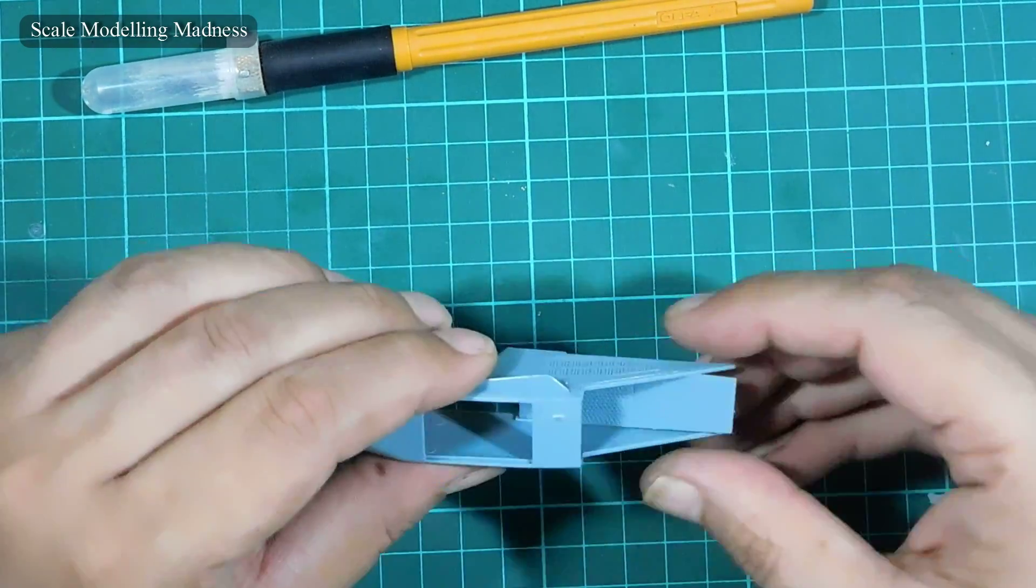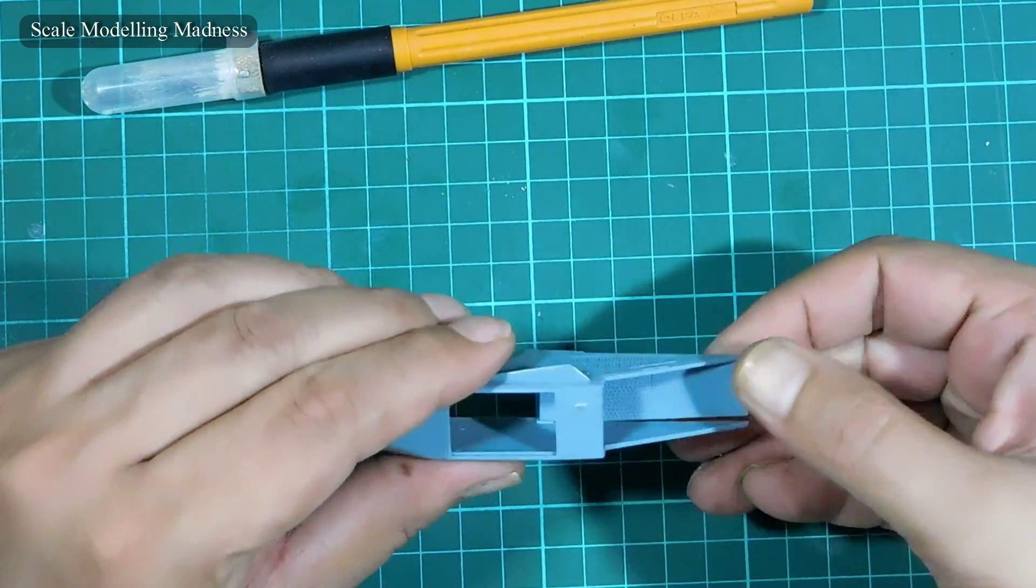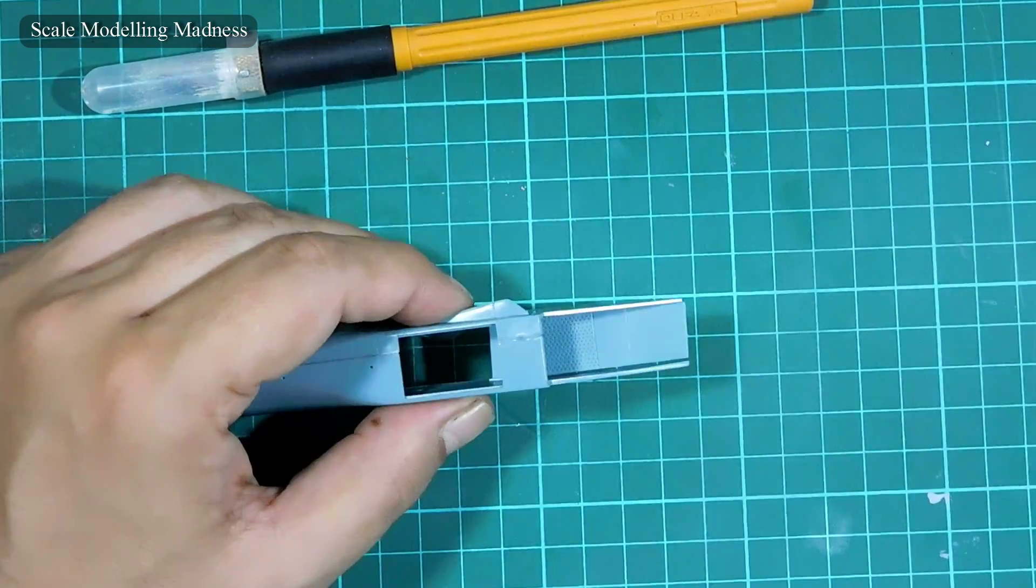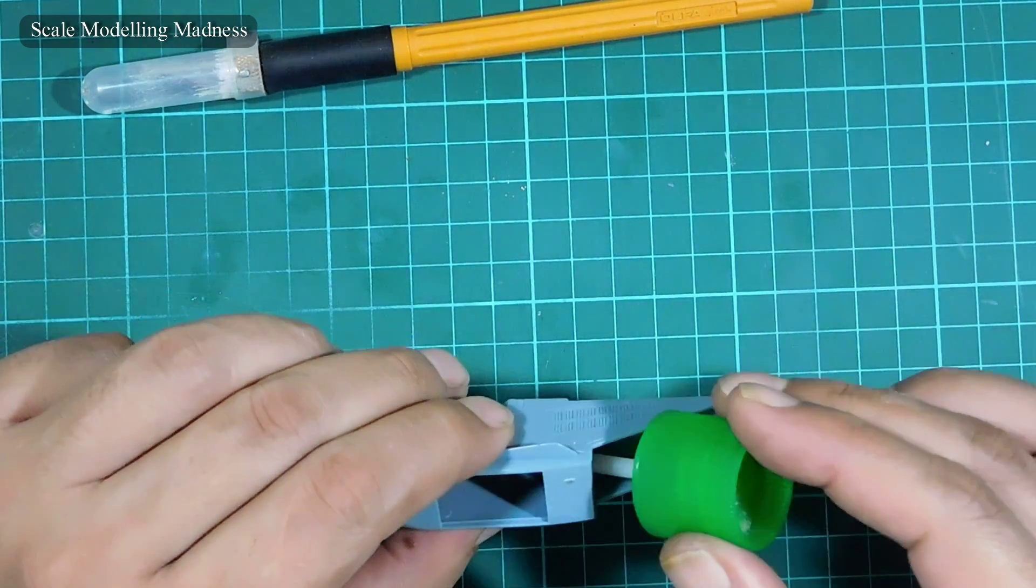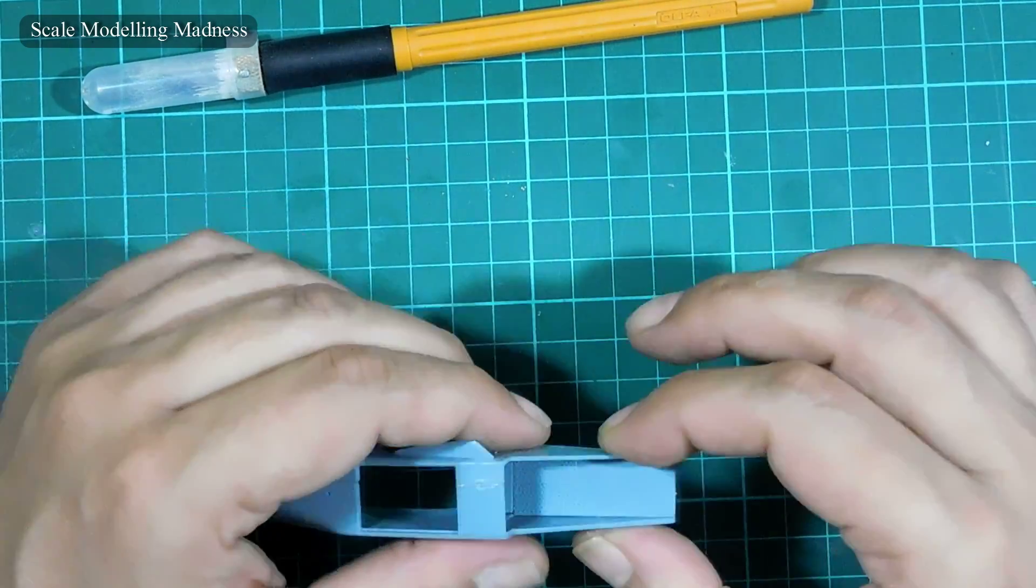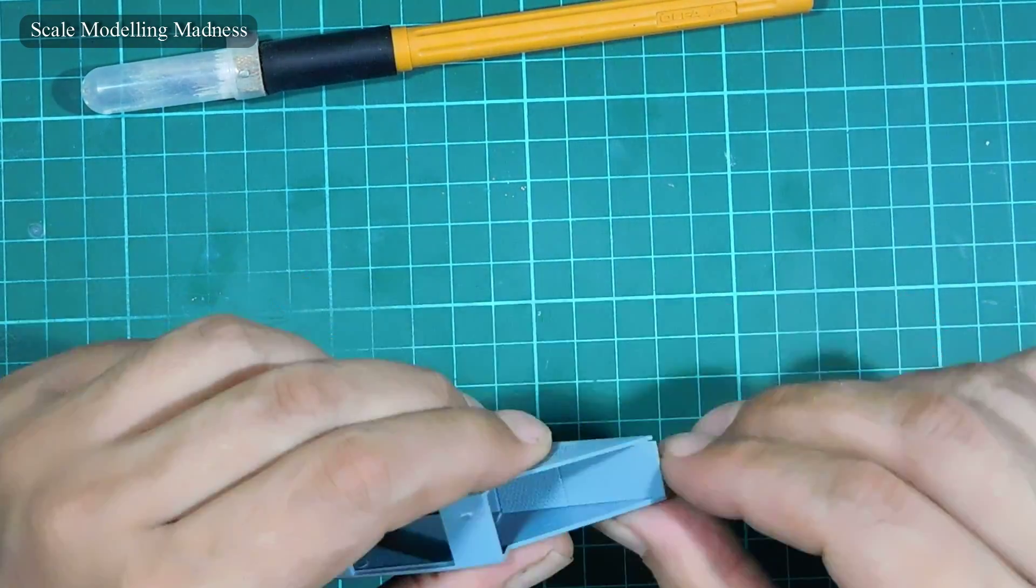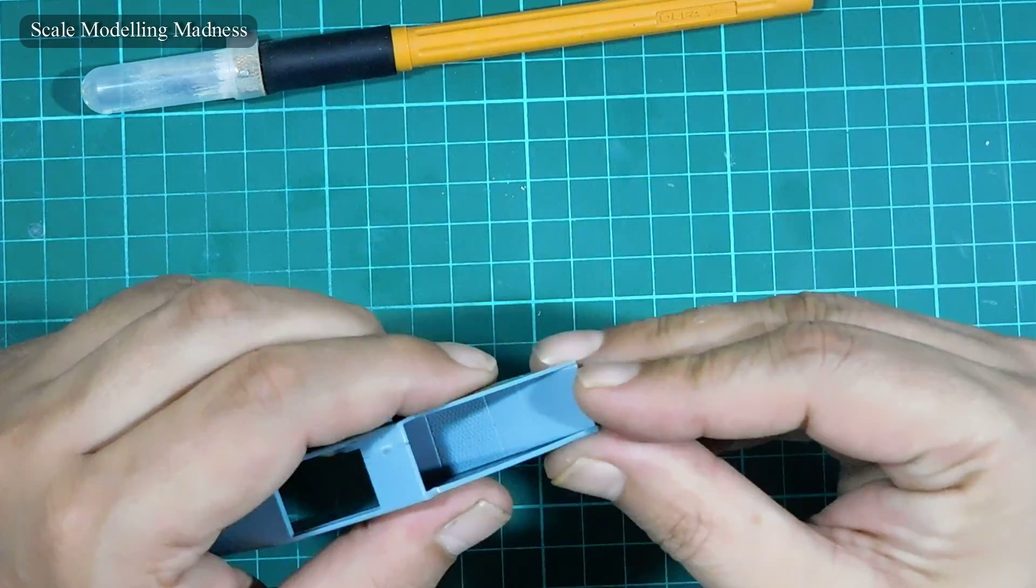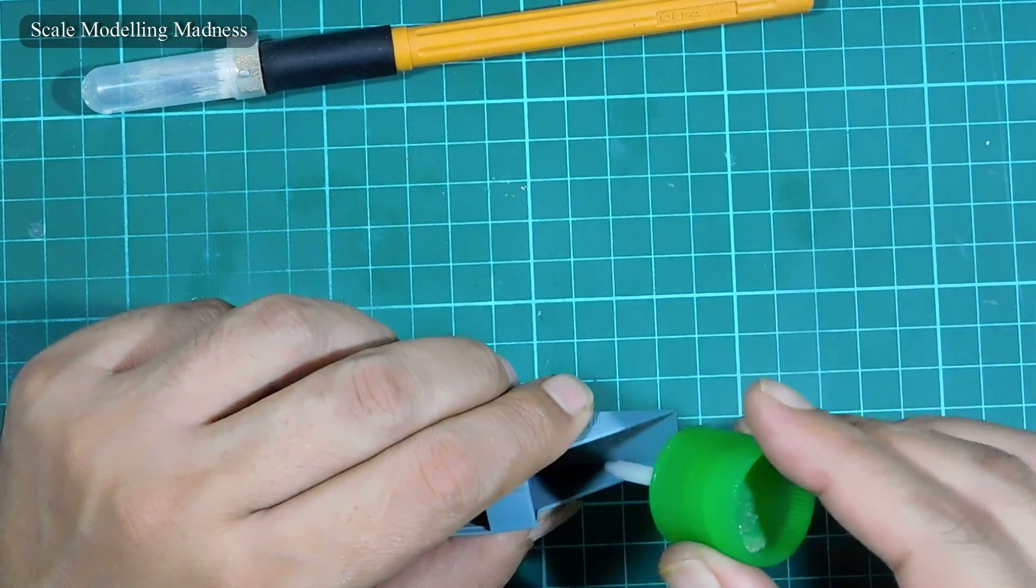Though there are only three parts to the intake, they are a little fiddly. Also, please be careful that you use the exact parts mentioned in the instructions. Although the parts appear to be interchangeable, especially the flow plate, they are not. You will run into problems later if you use the incorrect parts.